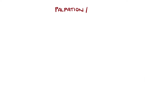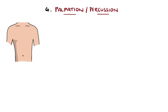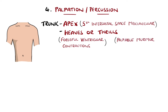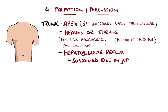Following our theme of working our way down, palpation in the cardiovascular exam involves palpating the trunk, feeling for the apex beat that is normally approximately at the fifth intercostal space at the mid-clavicular line, and feeling for the presence of any heaves or thrills — a palpable vibration from forceful ventricular contractions or from heart murmurs respectively. Pressure may be applied to the right upper quadrant, causing increased venous return through the inferior vena cava, leading to a rise in jugular venous pressure. If this is a sustained rise, it may indicate right ventricular failure, whereas a normally functioning heart should be able to eject the increased return.